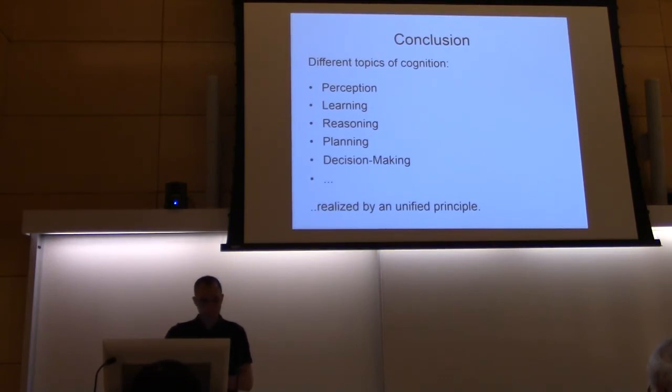In conclusion, we can say that we have a unified principle which is able to have perception, learning, reasoning, planning, decision-making realized. I think this is one of the reasons parts of the system might not be directly useful to you, but it might be worth to look into certain aspects of the system, because I think we have some stories which might be worth seeing.